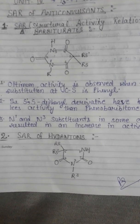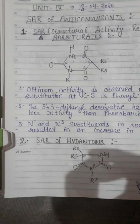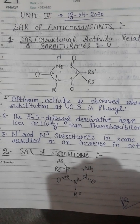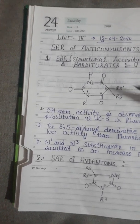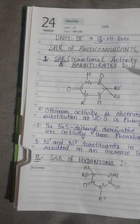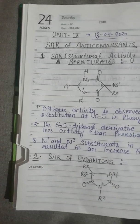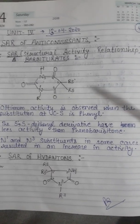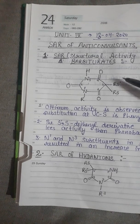The first category is barbiturates. Point one: optimum activity is observed when the substitution at carbon-5 is phenyl. If any substitution at carbon-5 is present, the activity of the compound is optimum or increased. Point two: the 5,5-diphenyl derivative has less activity than phenobarbitone — meaning if two phenyl groups are substituted at the 5,5 position, the compound is less active compared to phenobarbitone.